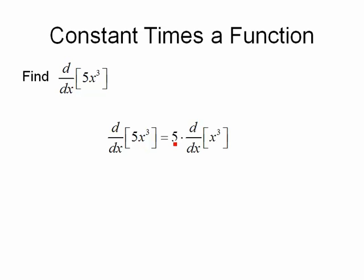So I'm going to pull the 5 outside the derivative, so I've put it in front right here. Now we just need to take the derivative of x cubed, and remember the power comes down in front, we take one away, we get 3x squared.